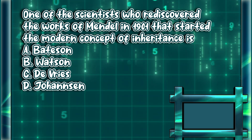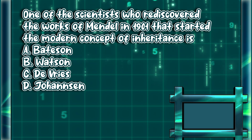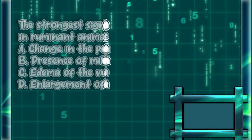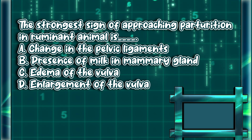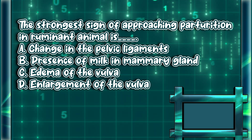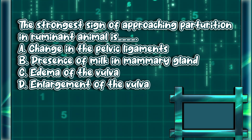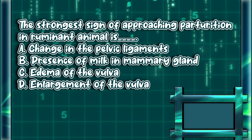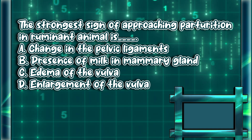One of the scientists who rediscovered the works of Mendel in 1901 that started the modern concept of inheritance is: A) Battison, B) Watson, C) De Bries, D) Johansson. The answer is letter C.